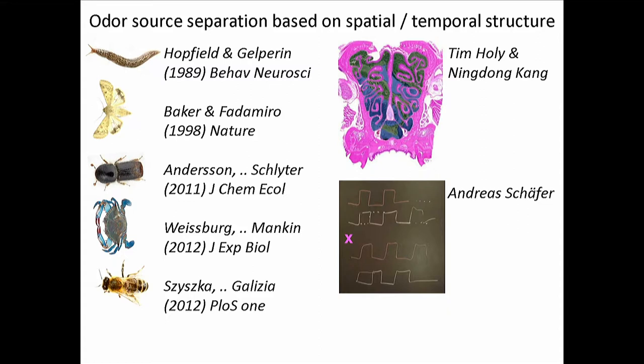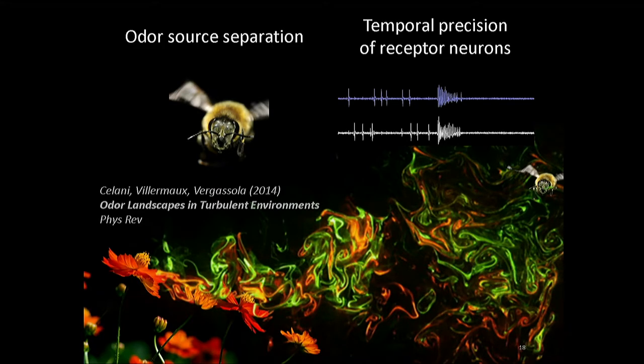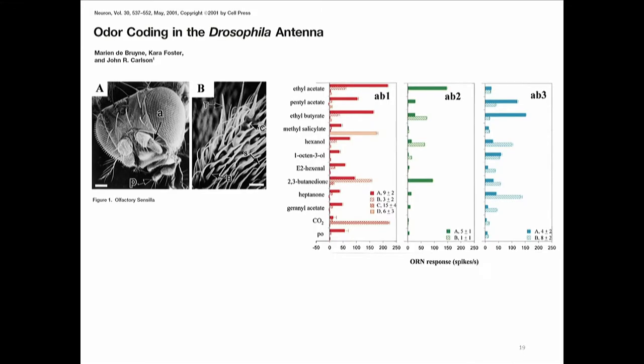Now we want to know how much temporal information is actually available for the insect. We recorded the temporal precision of insect olfactory receptor neurons. The following data is all Drosophila data. Drosophila smell with their antennae, which are covered with sensilla. Each sensillum houses two, three, or four receptor neurons. The good thing is you can identify them all — it's very easy to find the same receptor neuron again and again.